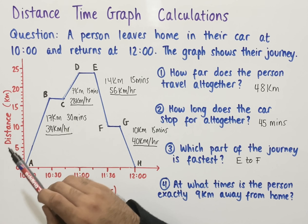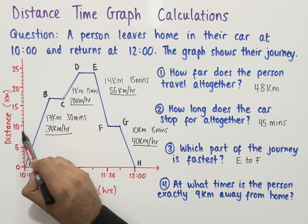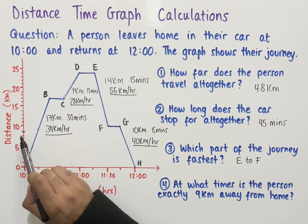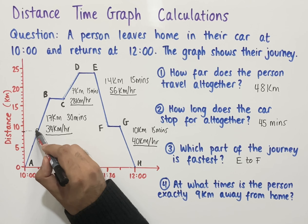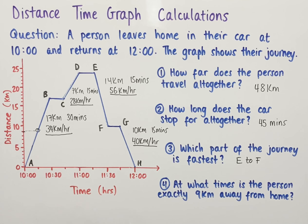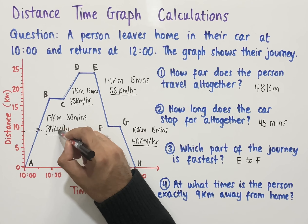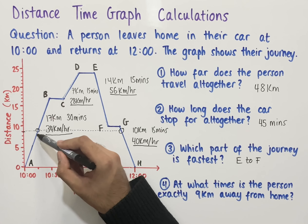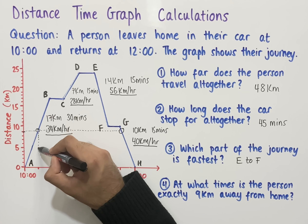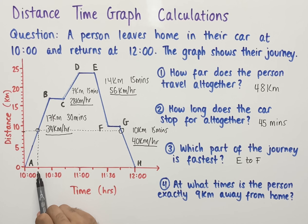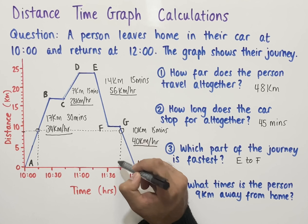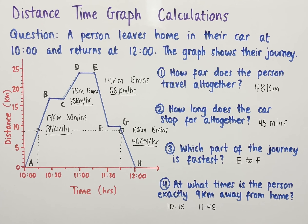To find when the person is exactly 9 kilometers from home, we go up to 9 kilometers on the y-axis and draw a horizontal line. The first point where the car is 9 kilometers from home reads as 10:15 on the x-axis. Extending the line further, a second point appears, which reads as 11:45. So the two times at which the person is exactly 9 kilometers from home are 10:15 and 11:45.